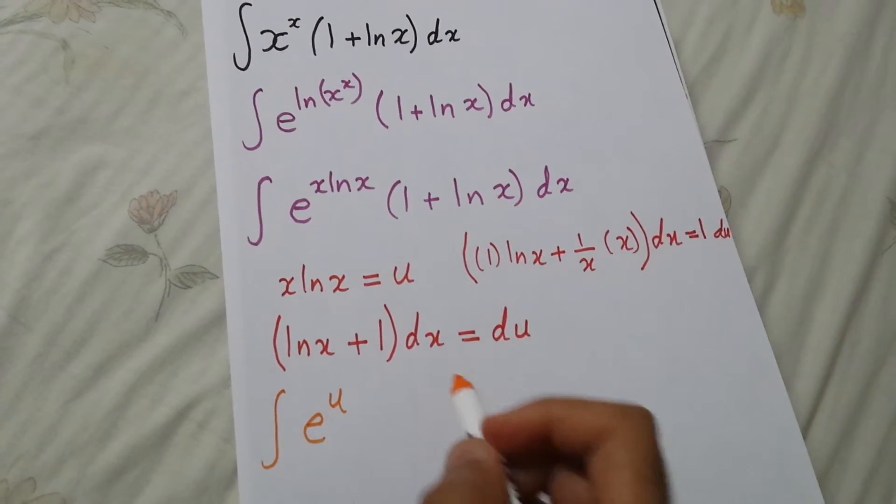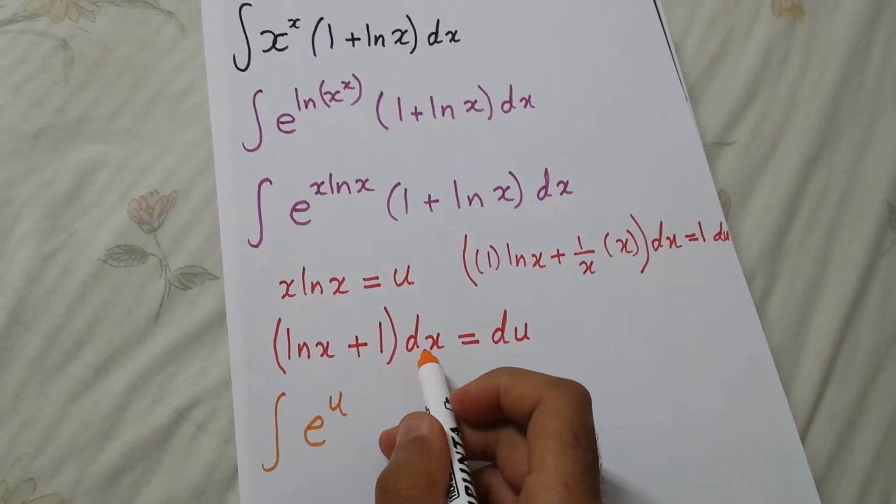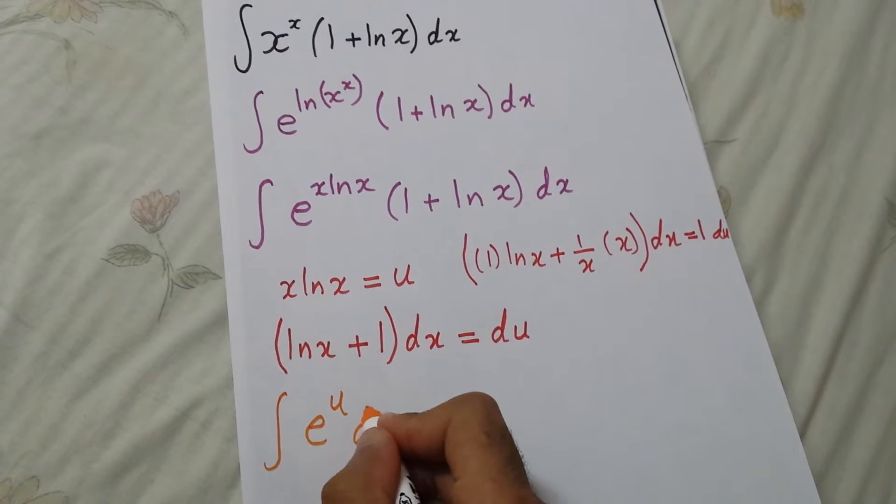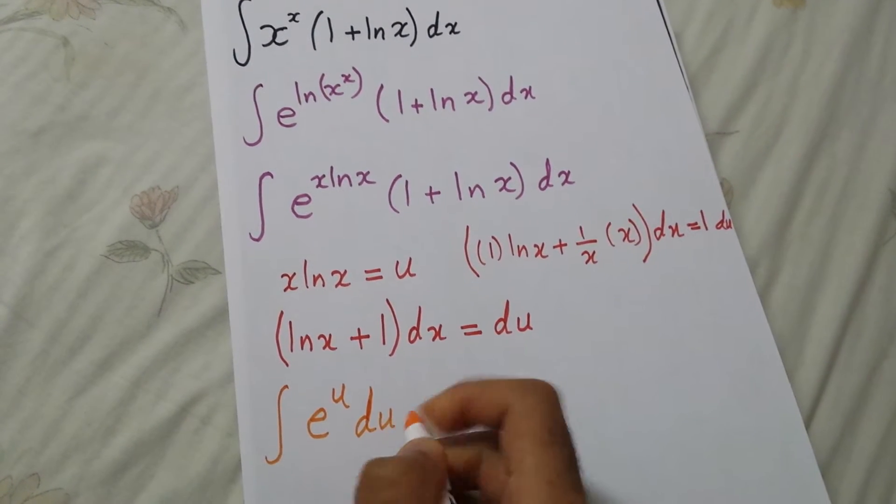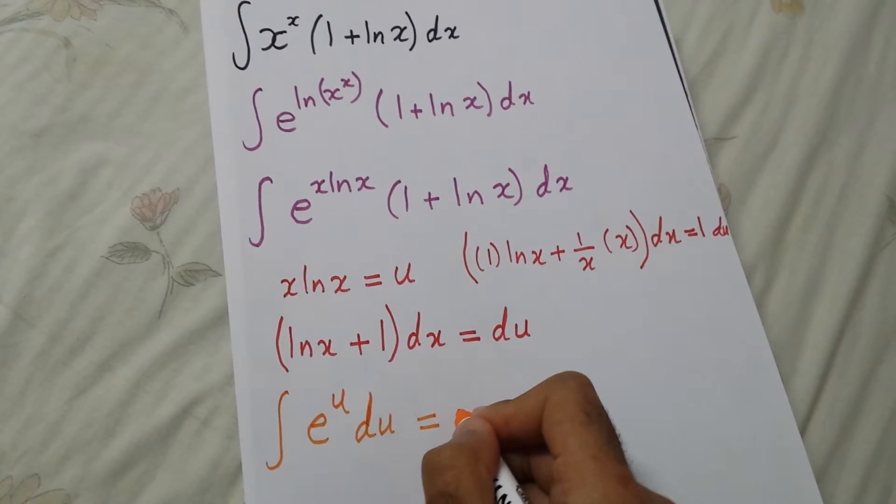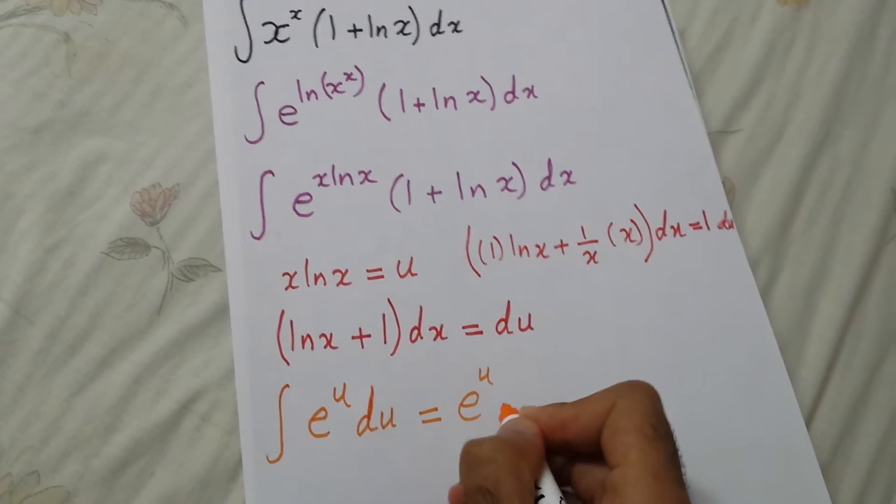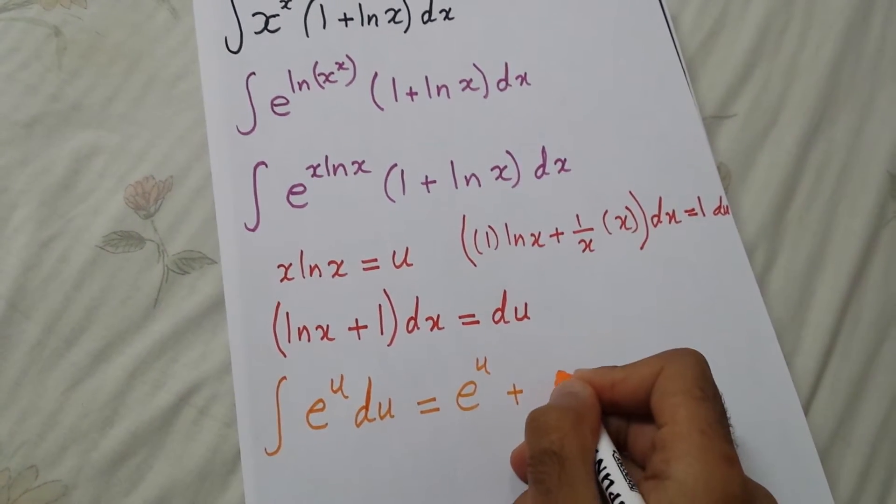So the integral will be e to the u plus the constant.